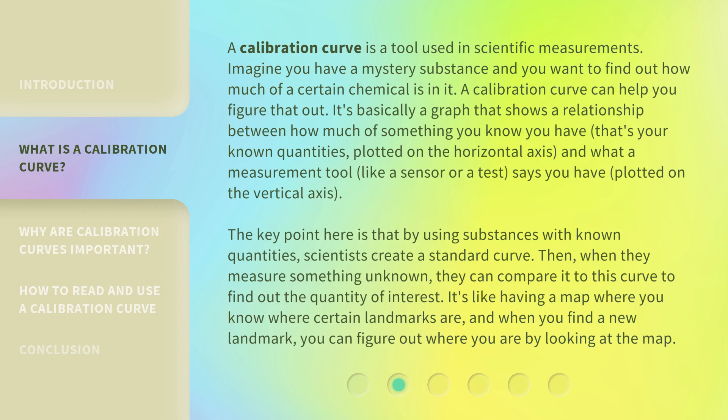A calibration curve is a tool used in scientific measurements. Imagine you have a mystery substance and you want to find out how much of a certain chemical is in it — a calibration curve can help you figure that out. It's basically a graph that shows a relationship between how much of something you know you have, your known quantities, plotted on the horizontal axis, and what a measurement tool, like a sensor or a test, says you have, plotted on the vertical axis.